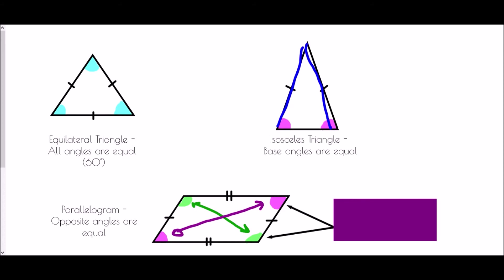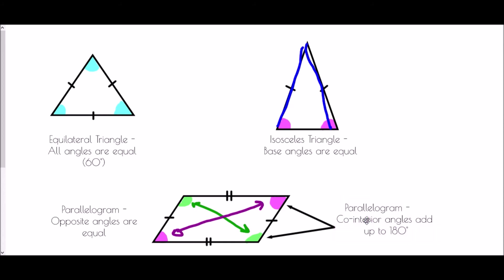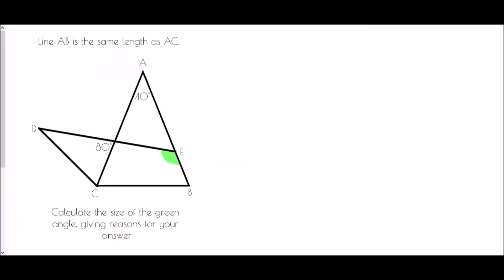Also, co-interior angles — the green and pink angles next to each other — add up to 180 degrees. That applies on each side: any pair of adjacent angles within a parallelogram will always add up to 180 degrees.